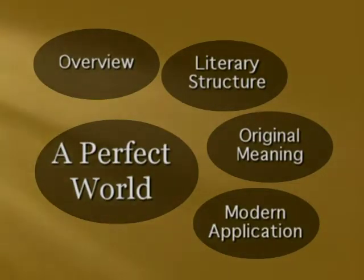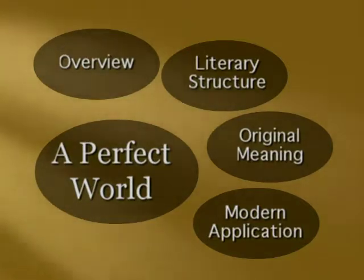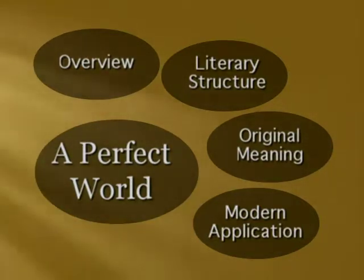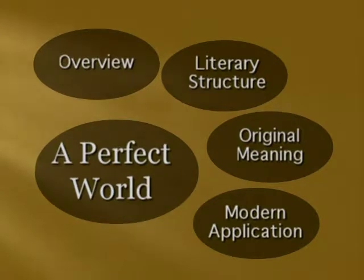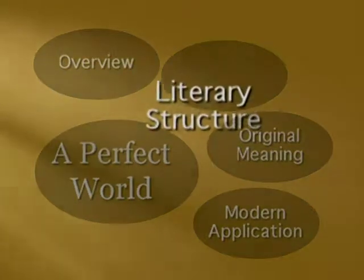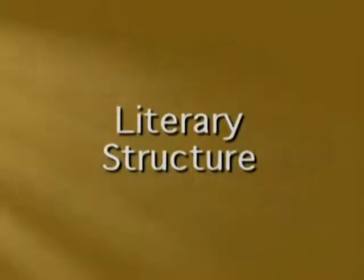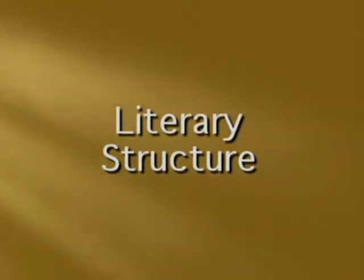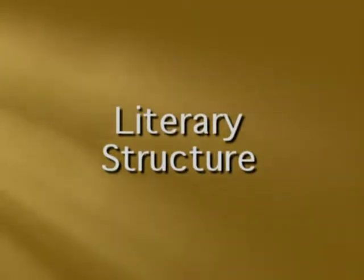Now that we have introduced our general approach to the primeval history of chapters 1 through 11, we are in a position to look at the details of the first section of Genesis: God's ideal world, described in Genesis chapter 1 verse 1 through chapter 2 verse 3.